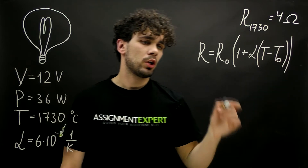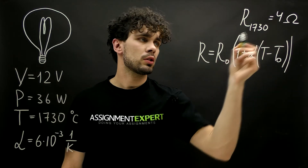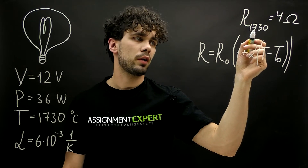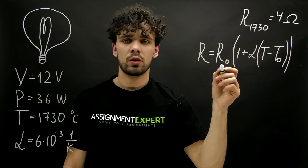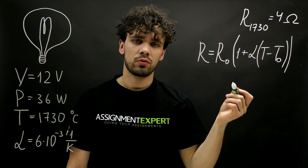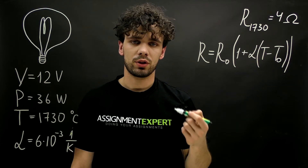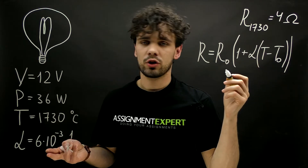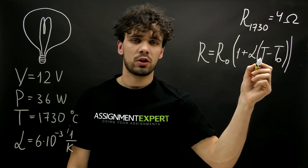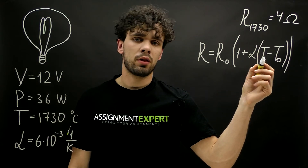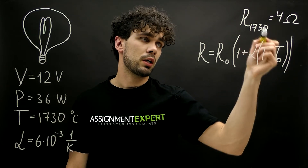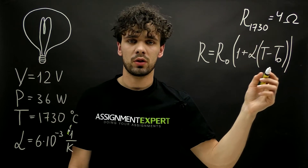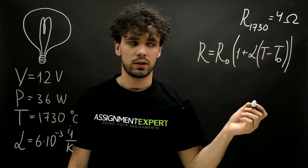Here, R is a certain resistance — in our case, we will use the resistance for 1730 degrees. R zero is the reference resistance, the resistance at zero degrees Celsius. Alpha is our temperature coefficient of resistance. T is the temperature at a certain resistance, in our case 1730, and T zero is the reference temperature, zero degrees Celsius.